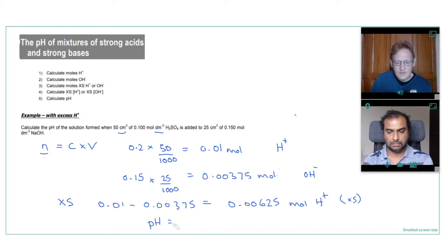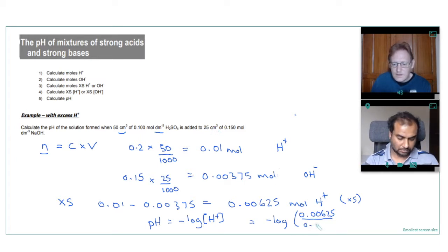And now to work out the pH. The equation for pH is minus the log of the hydrogen ion concentration. And our concentration is moles divided by volume. So we know the moles is 0.00625. And our volume, well, we've added 50 and 25 centimeters cubed. So that's 75 centimeters cubed. Divide that by 1000 to get decimeters cubed will be 0.075. So the minus log of that gives us a pH of 1.08 to two decimal places.